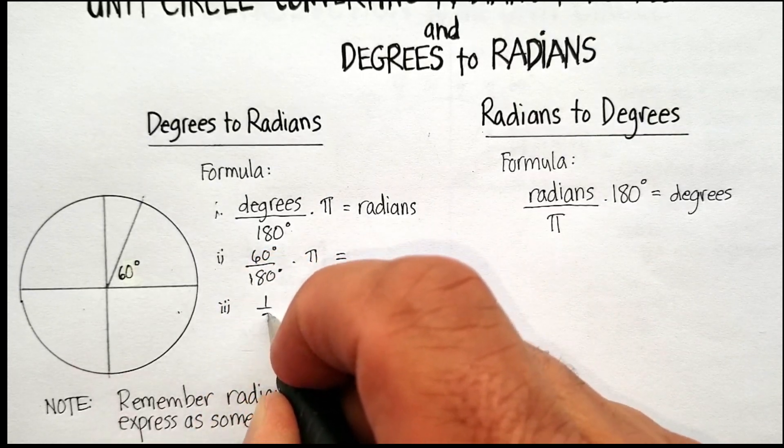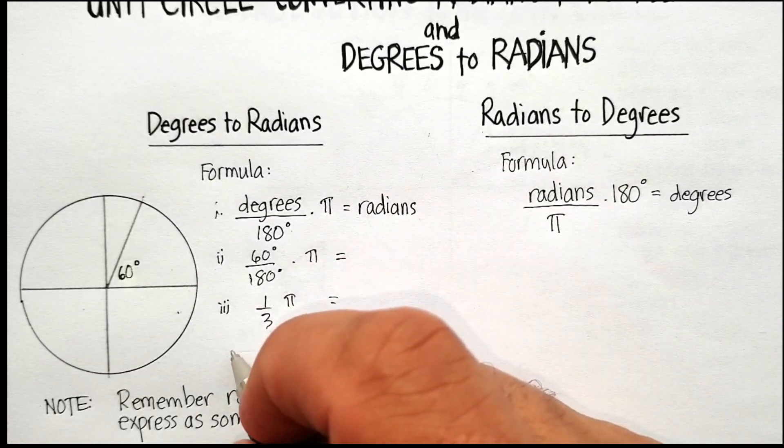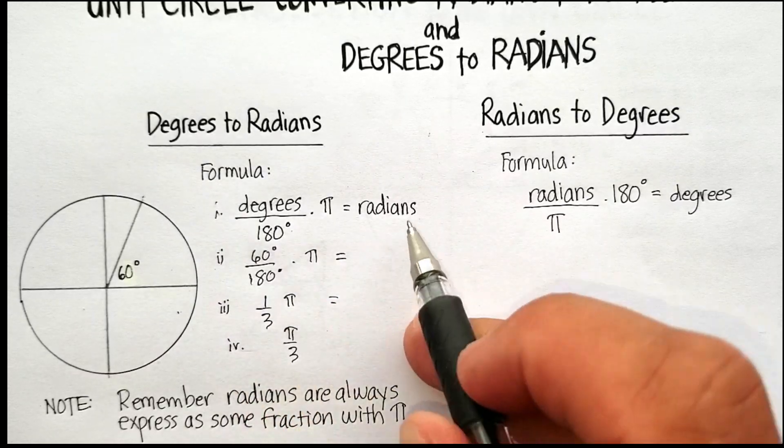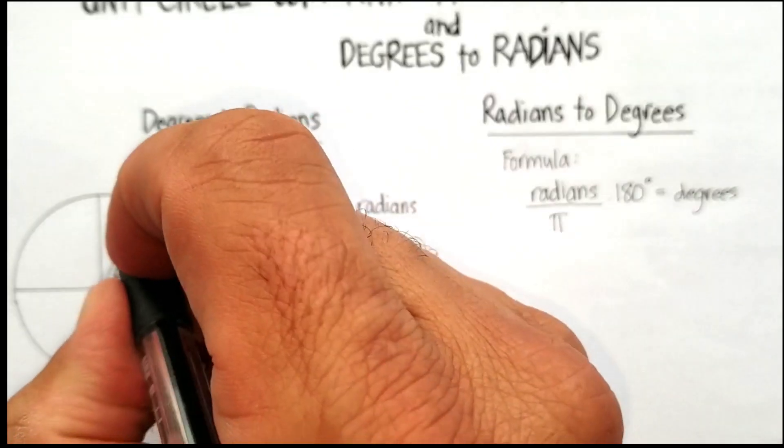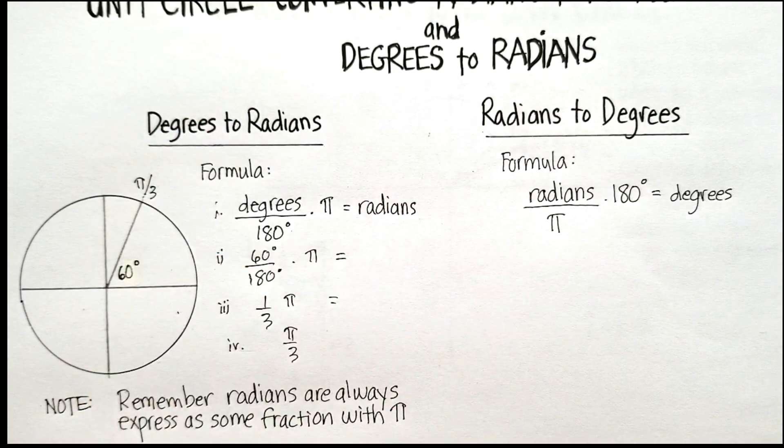60 divided by 180 is 1 third, so 1 over 3 pi, or just finally pi over 3 will be my number of radians. So I just put pi over 3 at that point right there.